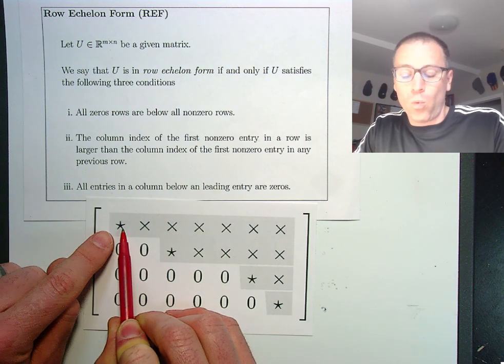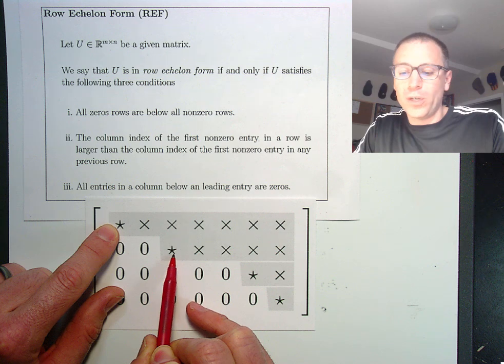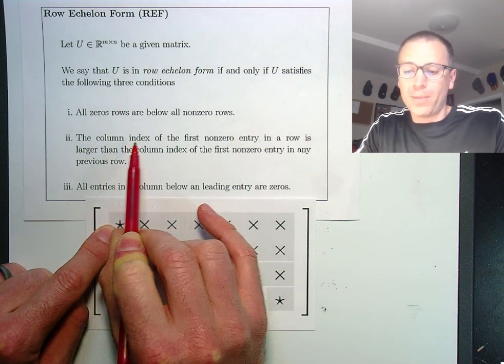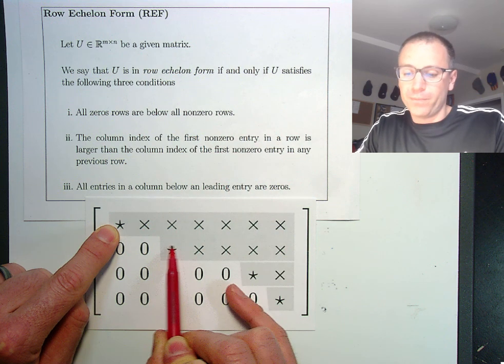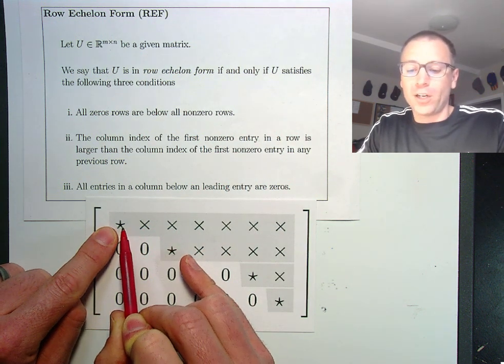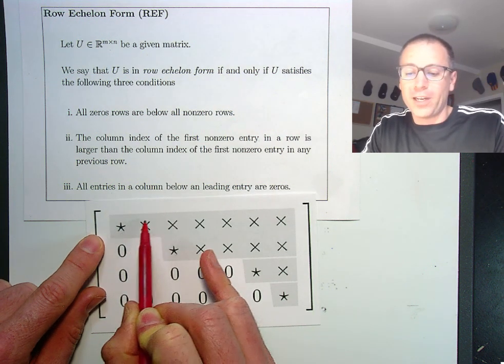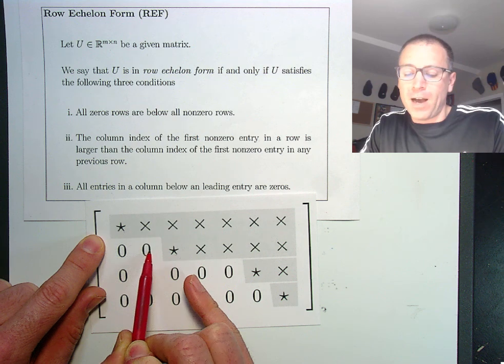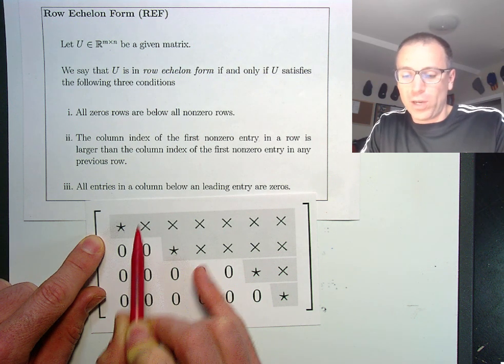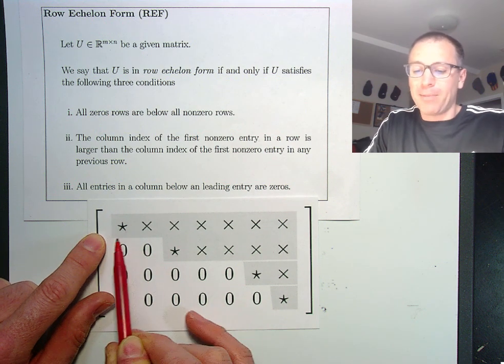Leading entry in row one is in column one. Leading entry in row two is in column three. Three is bigger than one. The column index of the first non-zero entry in row two is bigger than the column index of the first non-zero entry in row one. That's the stair-step. This stair is a little bit longer because the pivot position two actually ends up to be zero in column two and it's placed in column three instead.